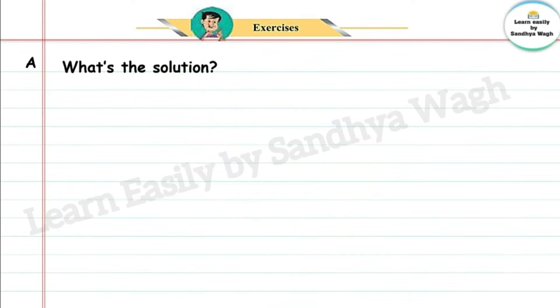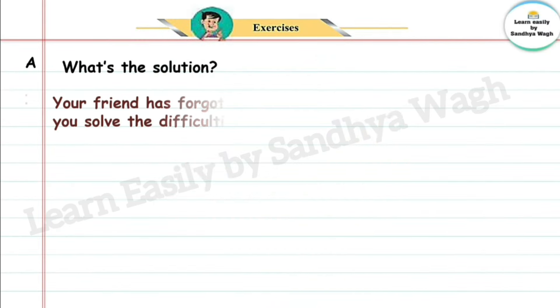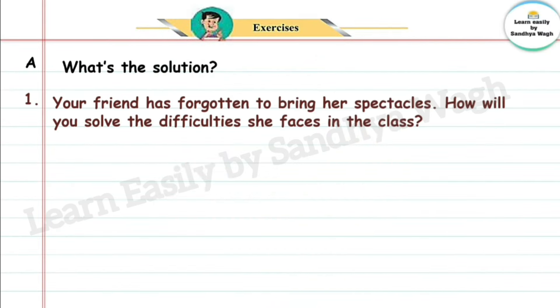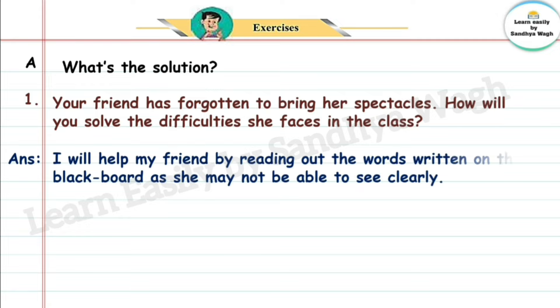Section A — What's the solution? Question 1: Your friend has forgotten to bring her spectacles. How will you solve the difficulties she faces in the class? Answer: I will help my friend by reading out the words written on the blackboard, as she may not be able to see clearly.